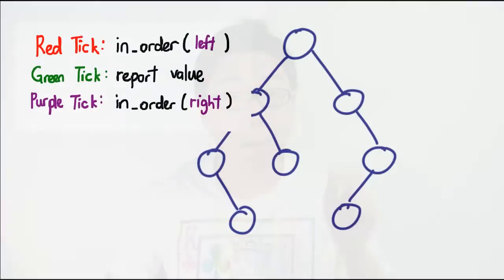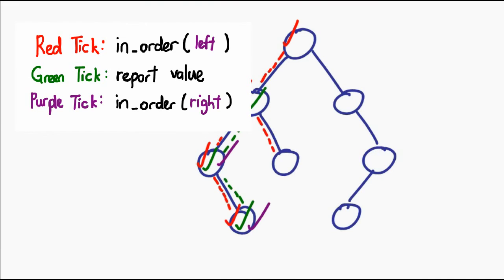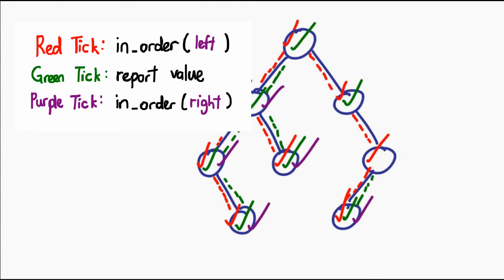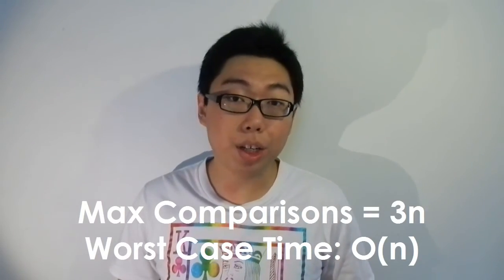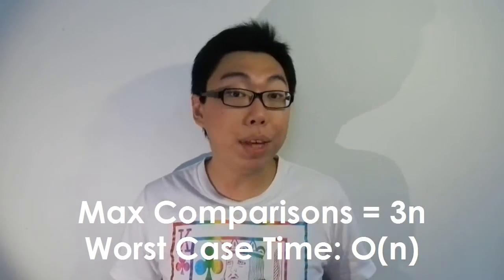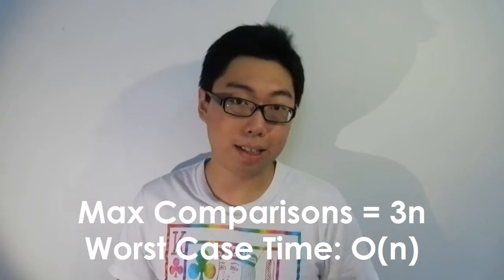Every time we perform in-order traversal, every node is visited a maximum of three times — never more than that. I will not offer you a rigorous proof of this, just watch as I do this trace. Every time I'm looking at a node, I give it a tick in a different color so you can tell easier. Notice that at no point do I tick a node more than three times. So essentially, in the worst case, the maximum number of comparisons we are making is 3N, which of course under Big O notation we drop the coefficient, and we get O(N) as its time complexity.